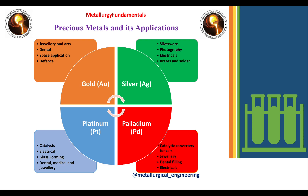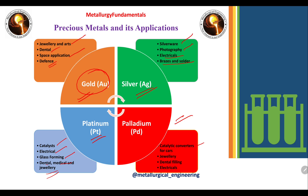Next are precious metals and their applications. Gold, the most precious metal, is mainly used for jewelry and arts, dental applications, space applications, and defense purposes. Silver is used in silverware, photography, electrical fields, brazing, and soldering. Platinum is used as a catalyst, in electrical and glass forming, dental, medical, and jewelry applications. Palladium is used in catalytic converters for cars, jewelry, dental fillings, and electricals.